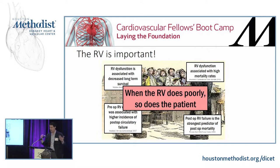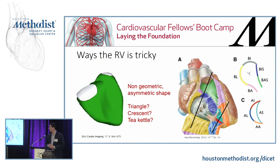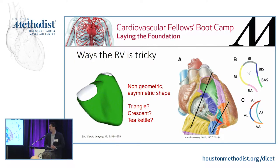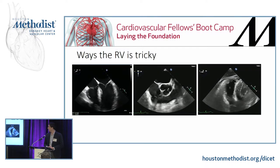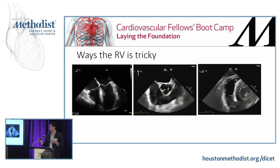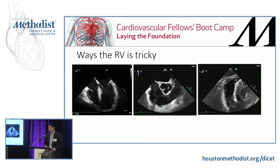It behooves us to know how to assess and treat the RV, but that can be tricky. The main reason is it's got a weird shape. Sometimes it looks like a triangle, sometimes like a crescent. The whole thing has been described as a tea kettle — the weirdest-looking tea kettle. You can appreciate how different 2D cuts of the RV look depending on the cut when you look at different TEE views.